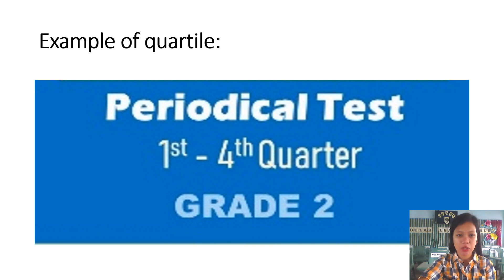For example of quartile, periodical test. Periodical test is an example of quartile distribution. Why? Because the periodical test is divided into four equal parts: the first, second, third, and fourth quarter.